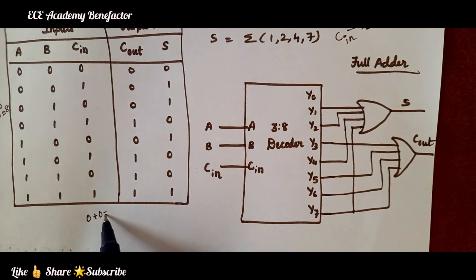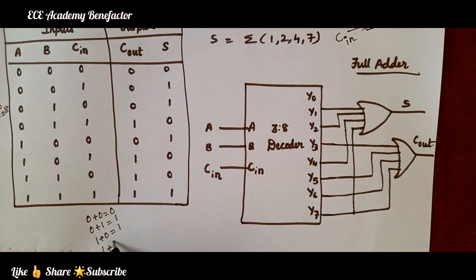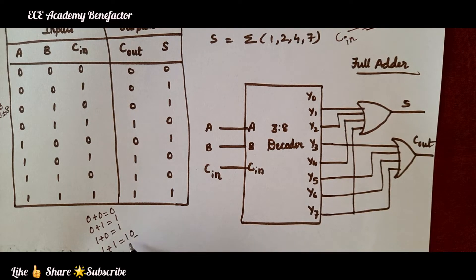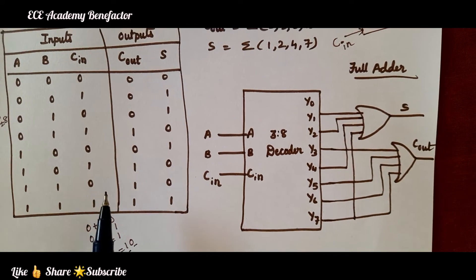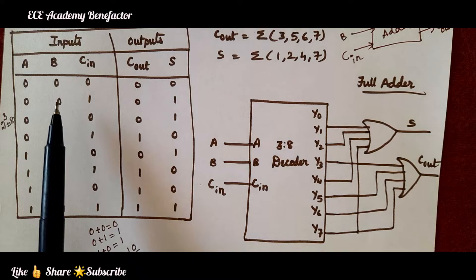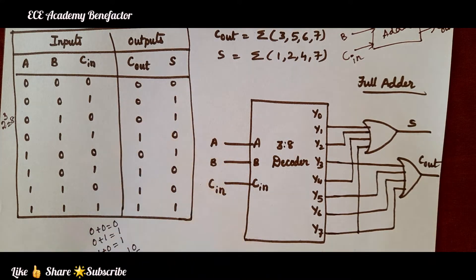You know how to do binary addition: 0 plus 0 is 0, 0 plus 1 is 1, 1 plus 0 is 1, and 1 plus 1 is 10, meaning sum is 0 and carry is 1. We have already understood the full adder truth table in our previous class — you can refer to that video.